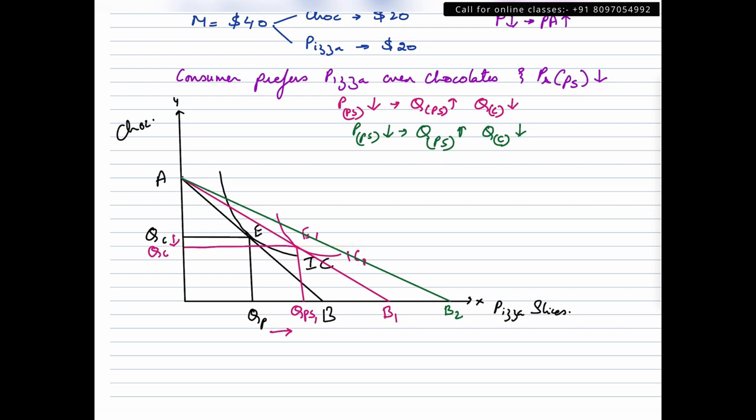Let us say now the consumer is at equilibrium somewhere here. This is indifference curve 2, equilibrium 2. This is the new quantity for pizza slices, so pizza slices quantity 2, and quantity of chocolates 2. I did not write 1 over here, so 1. Now again, here consumer has reduced his consumption of chocolates because he does not prefer chocolates and he's increased his consumption of pizza slices from quantity 1 to quantity 2.